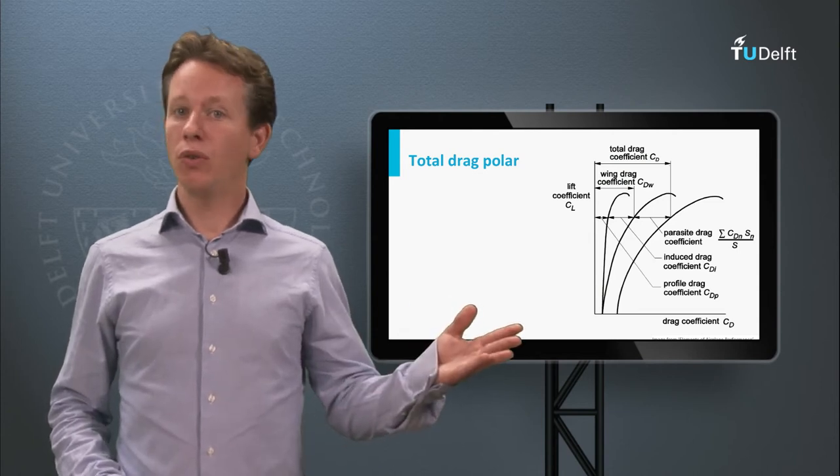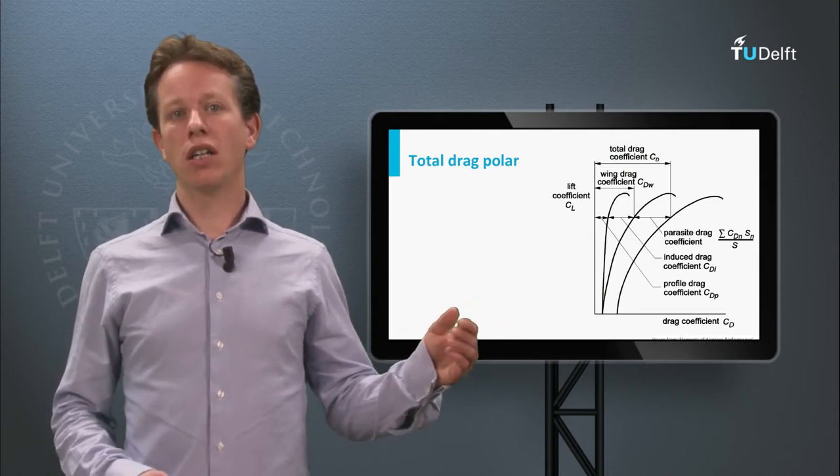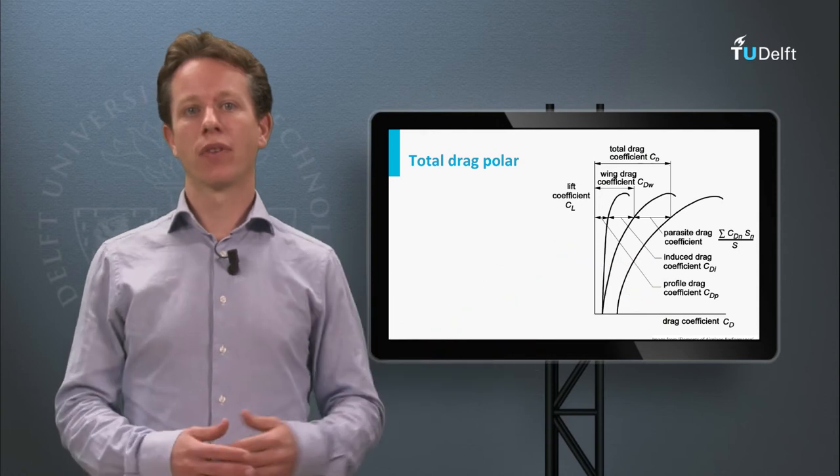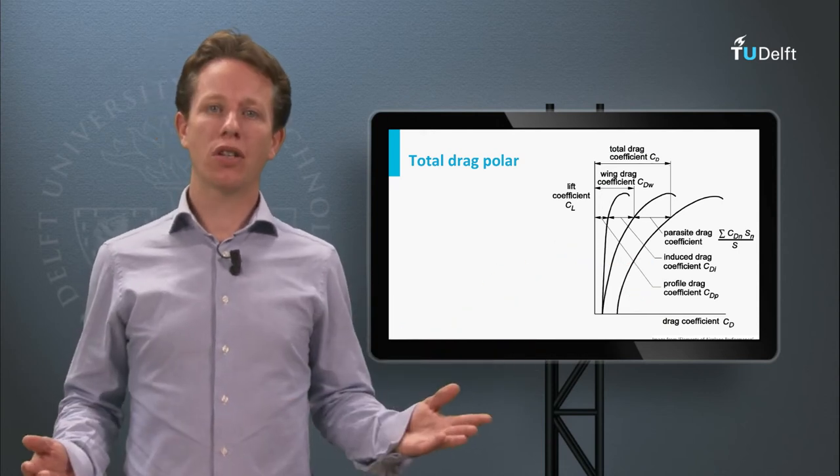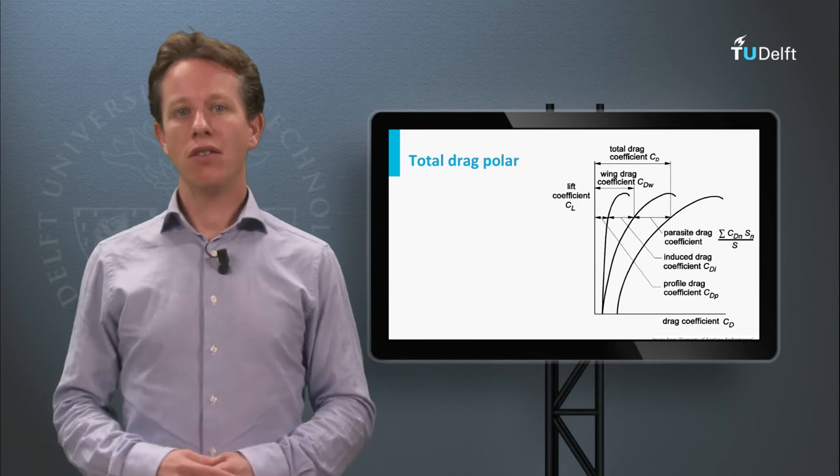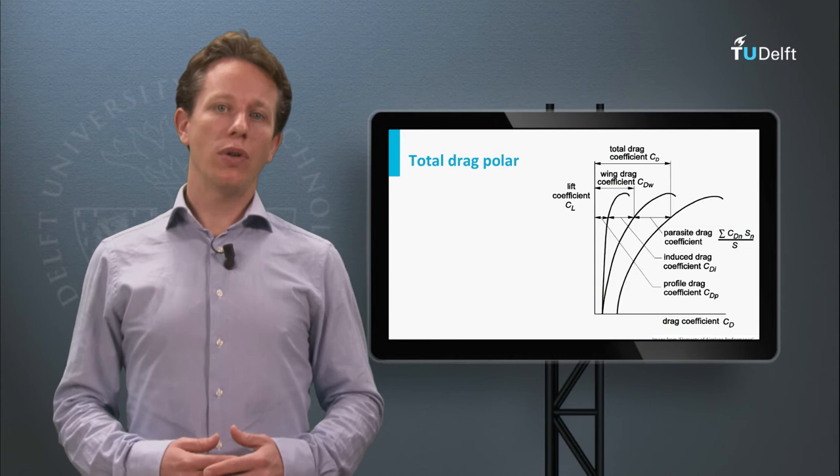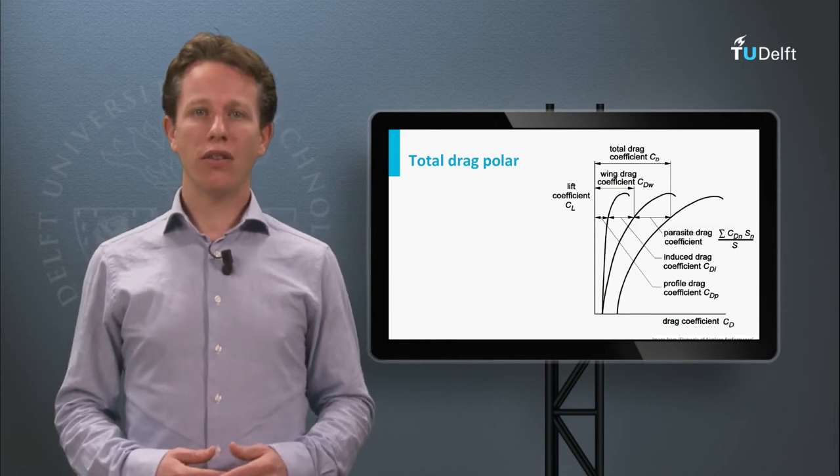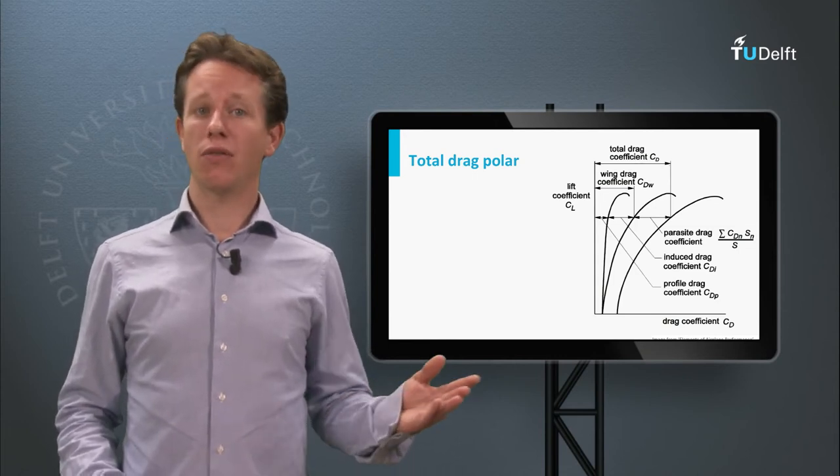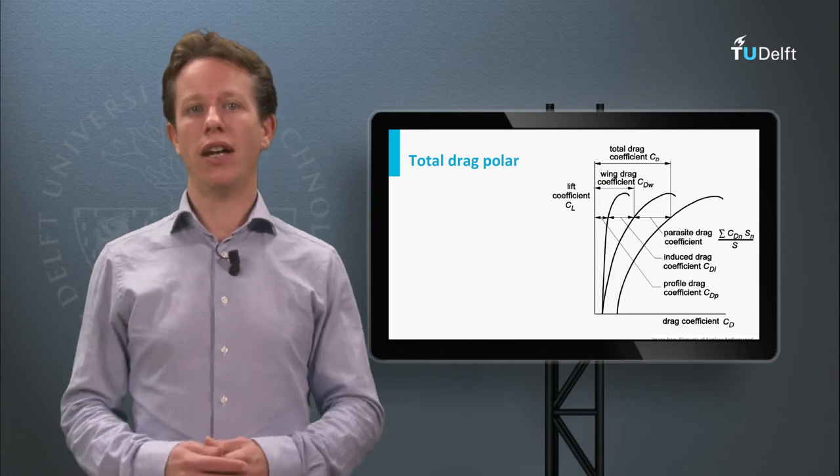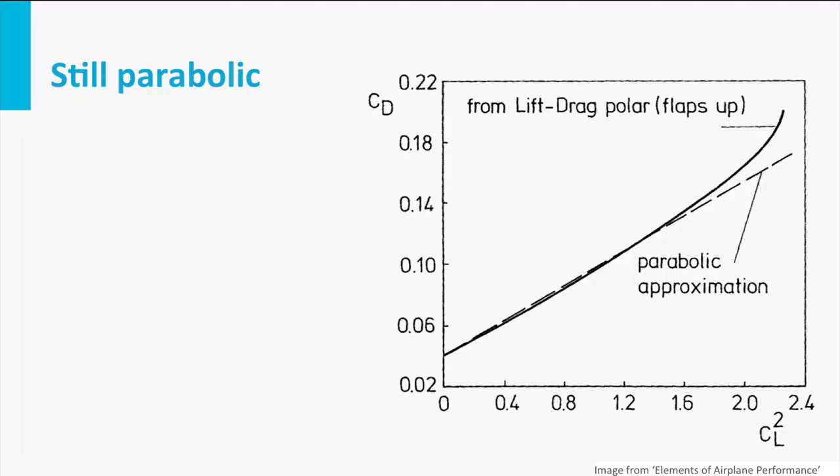So if we add all these effects to our lift-drag-polar, it will mainly shift to the right. In other words, we have more parasite drag for more or less the same lift. Now this curve still resembles a parabolic equation. We can see that clearly if we create a graph with CL squared on the axis instead of CL. Here you can see the lift-drag-polar of a real aircraft and the parabolic equation represented with a straight line. So basically we can still use the lift-drag-polar.